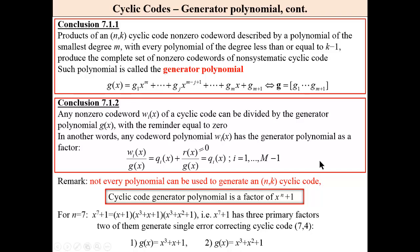Conclusion. Product of an (n,k) cyclic code non-zero codeword described by a polynomial of the smallest degree m, with every polynomial of the degree less than or equal k minus 1, produced a complete set of non-zero codewords of non-systematic cyclic code. Such a polynomial is called a generator polynomial.